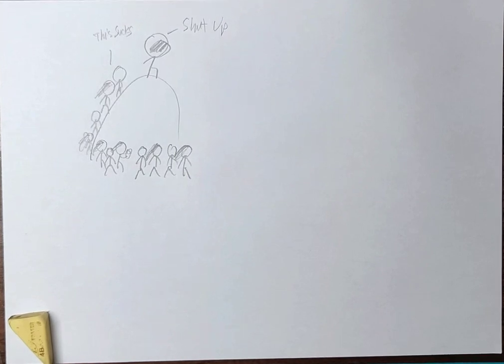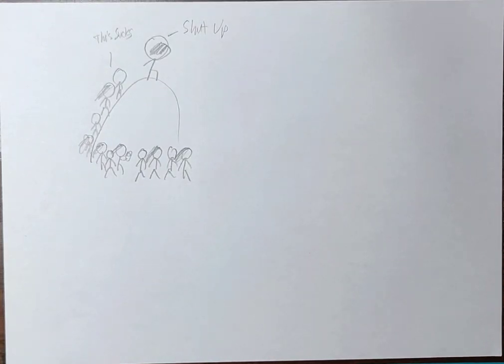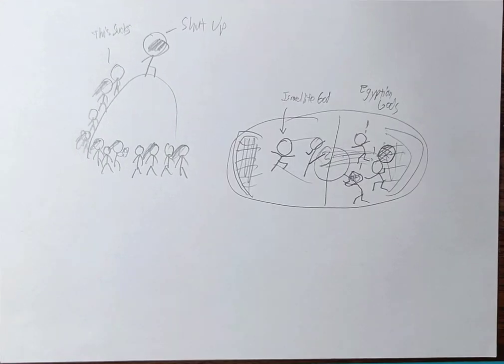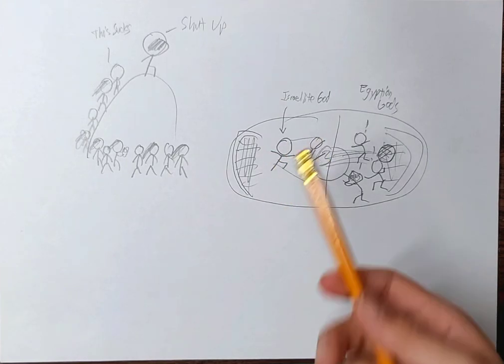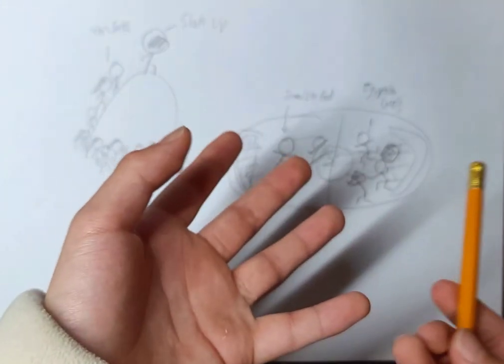The general view at the time was that gods, like football teams today, were ten a penny. You obviously supported the home god, but it didn't mean you despised all the others. If you're an Israelite, you'd support the Israelites; if you're Egyptian, you'd support the Egyptians.